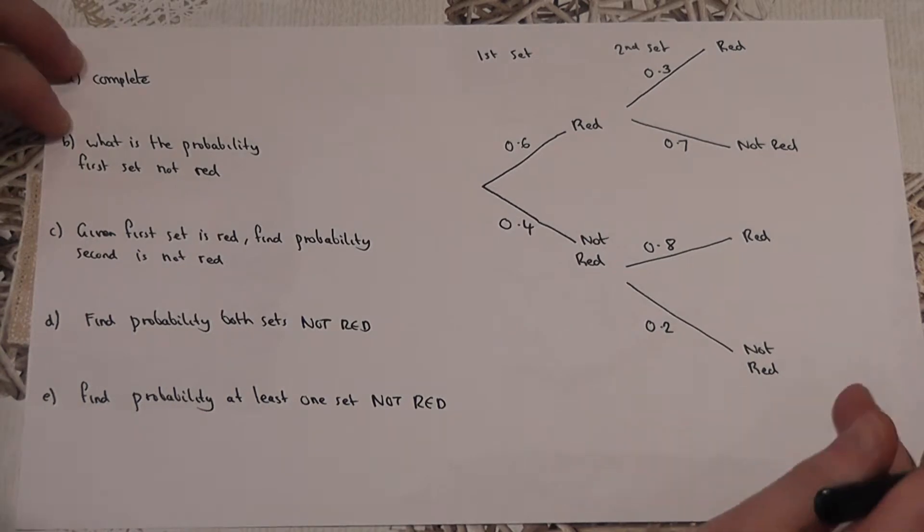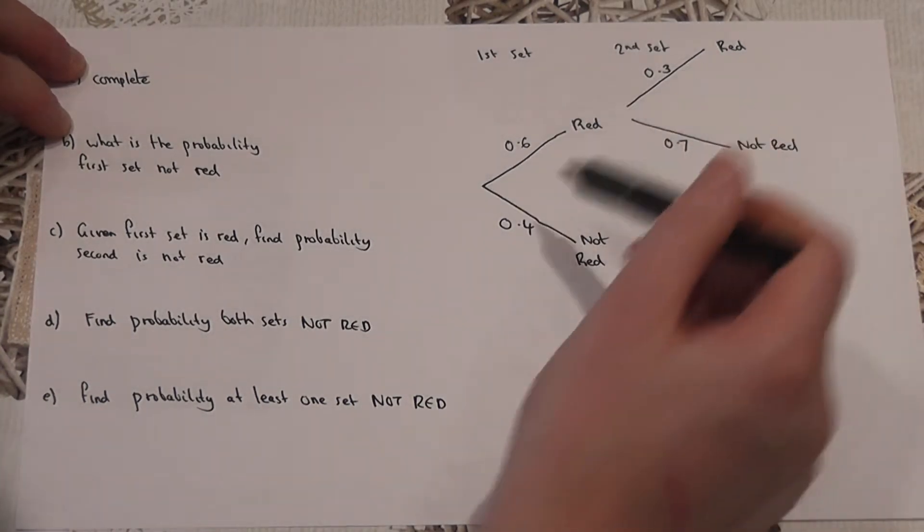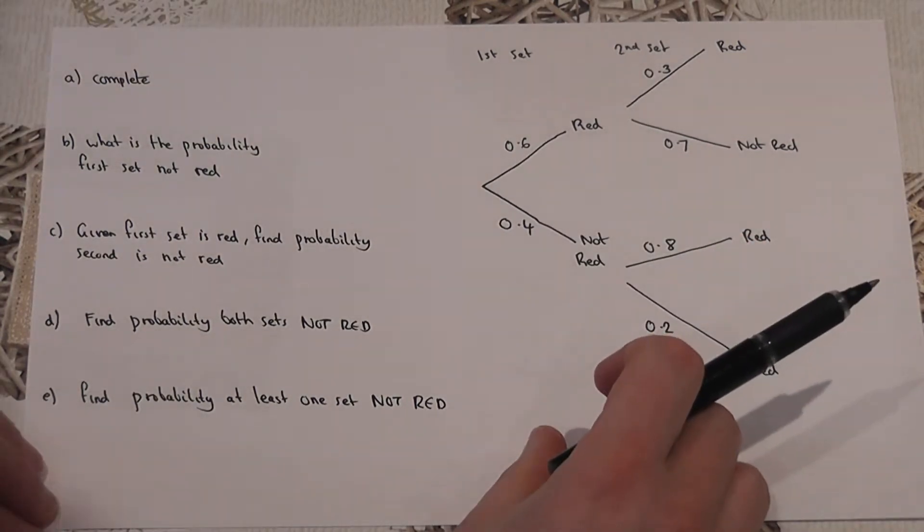In this context, for whatever reason, if the first set is red or the first set is not red, the decimals are different in this context.